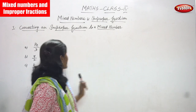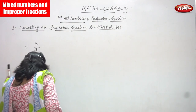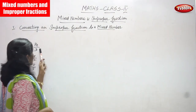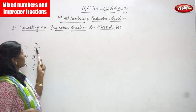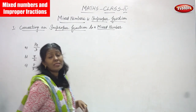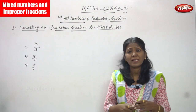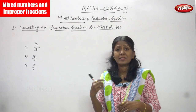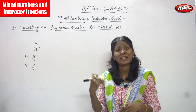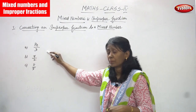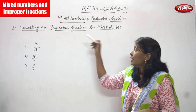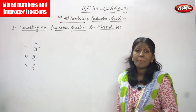Now we are going to solve the question: converting an improper fraction to a mixed number. The first question is 14 by 3. 14 is the numerator and 3 is the denominator. 14 is the greater number and 3 is the smaller number, so this is an improper fraction because the numerator is greater than the denominator. Now we are going to convert this improper fraction to a mixed number.